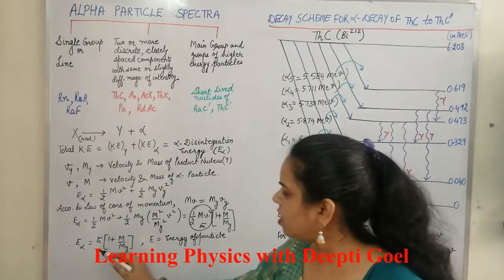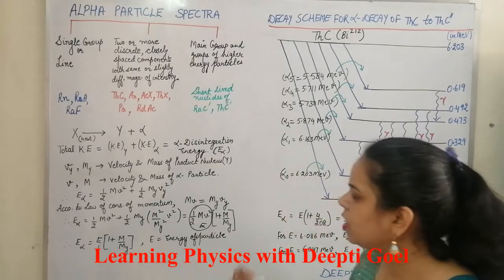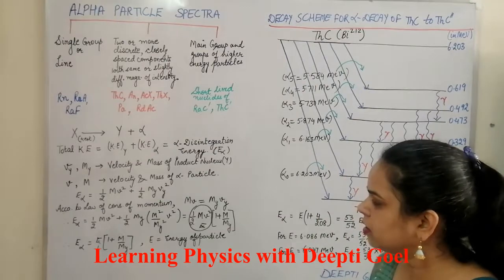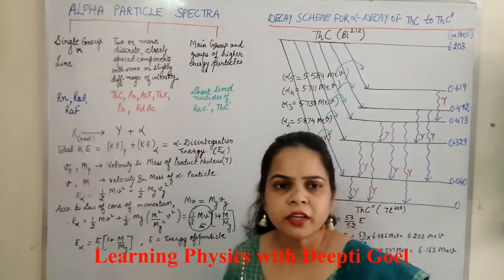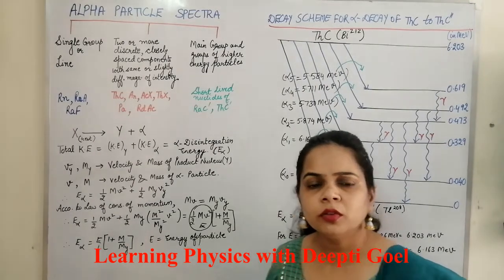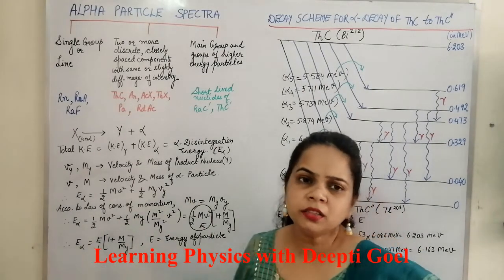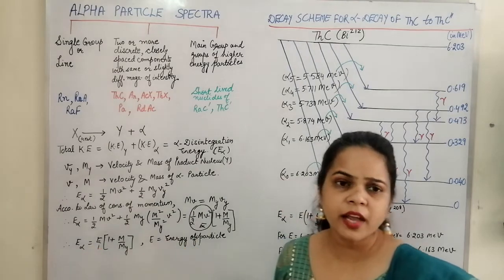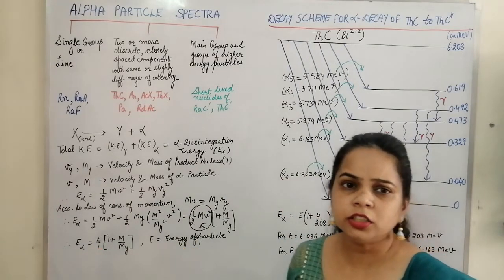Where E is the kinetic energy of the alpha particle. From the spectral series, we can calculate these alpha disintegration energies using this formula.